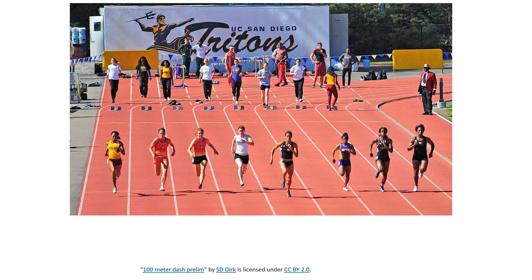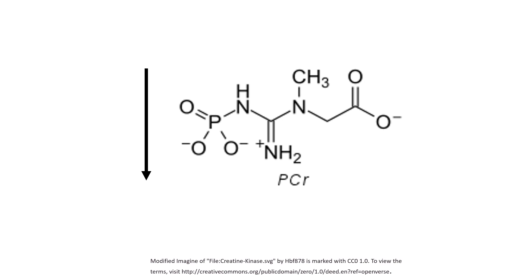During a sprint where the ATP demand is incredibly high and immediate, the muscle fibers need to resynthesize ATP rapidly, which is exactly what the phosphagen system can do. However, muscle fibers don't store a lot of phosphocreatine — there's only enough for the phosphagen system to run at a maximal rate for about 4 to 8 seconds. After that time is up, there is no phosphocreatine remaining and the phosphagen system can no longer operate.